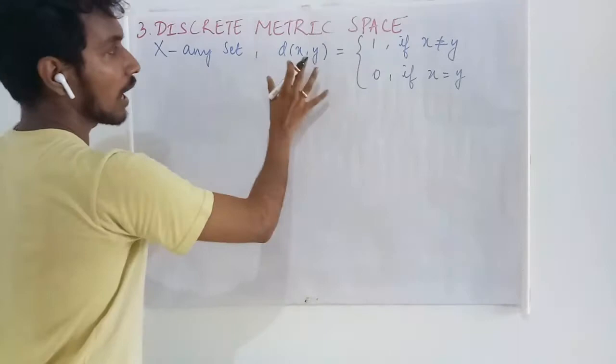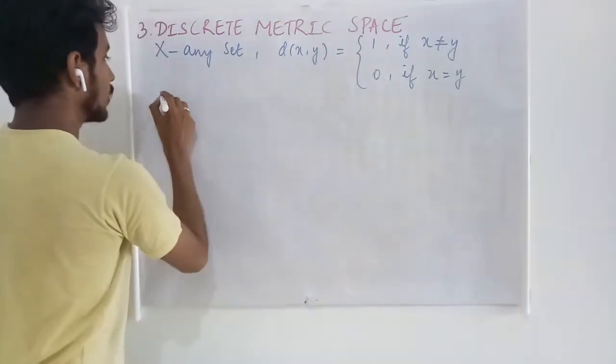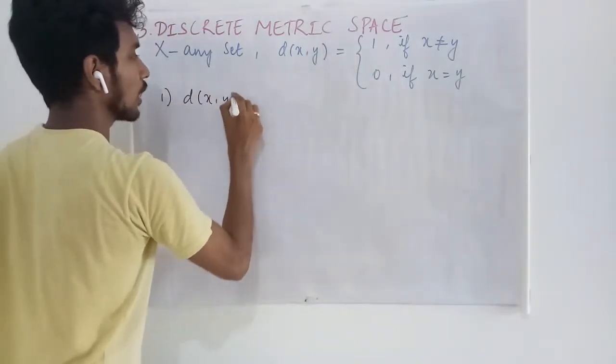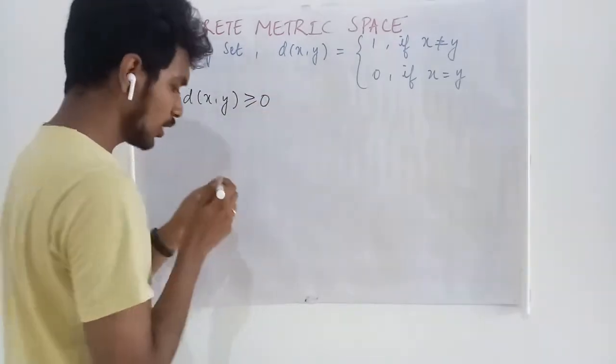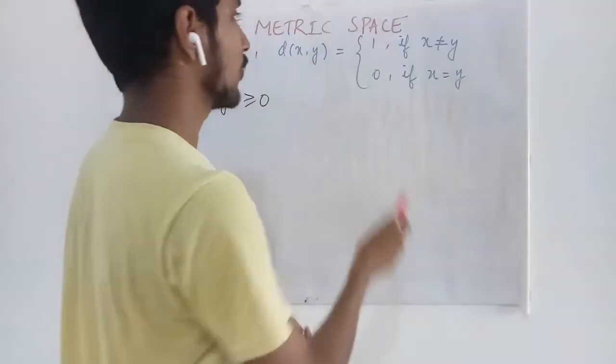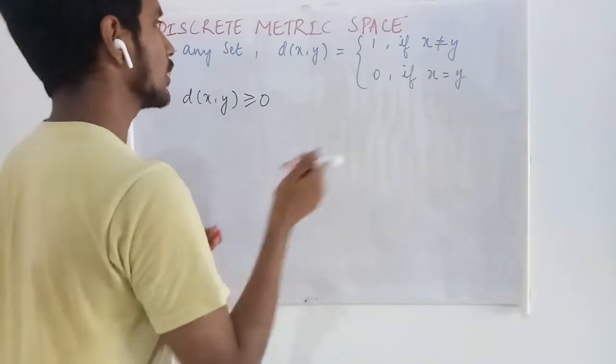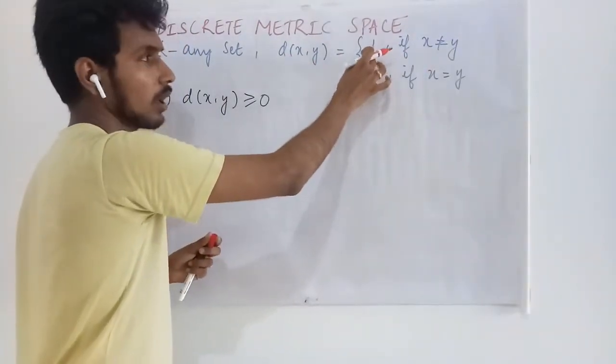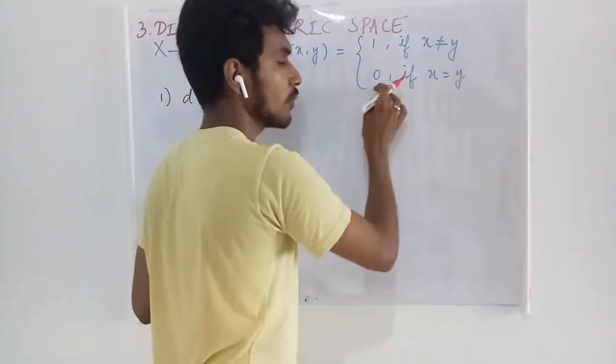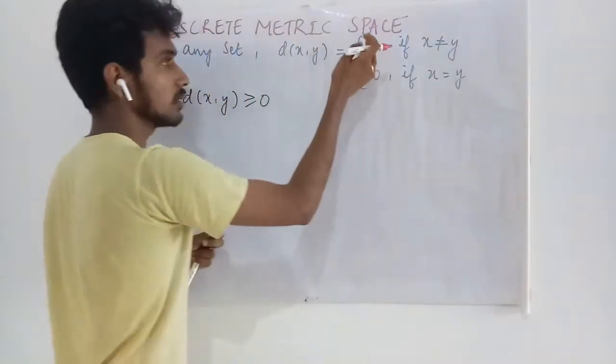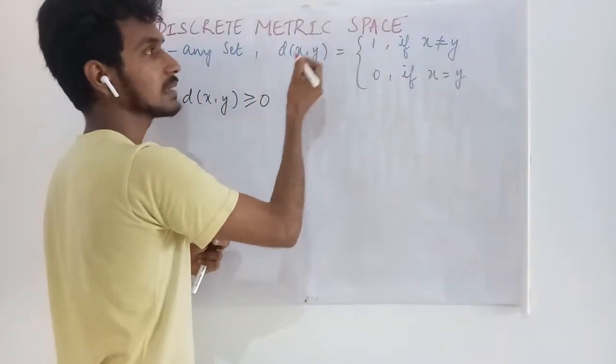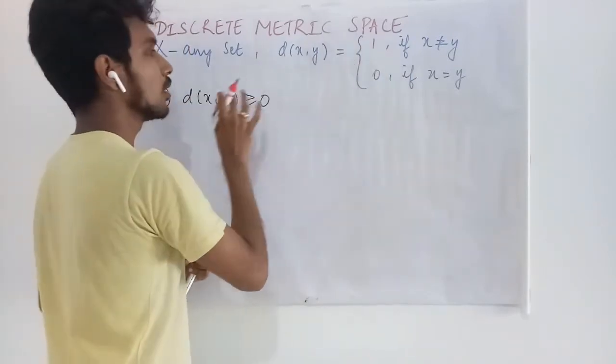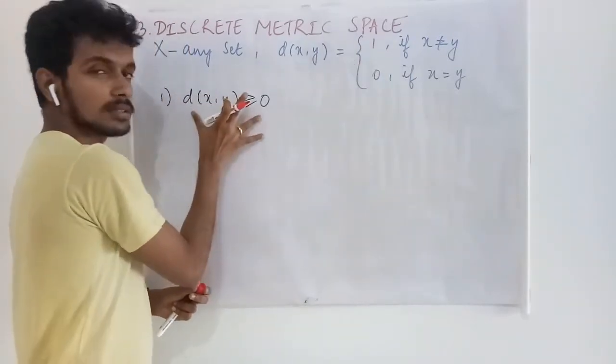Now we have to prove this is a metric. We have to prove the non-negativity. In order to prove non-negativity, you just look at the definition. What is given? If two entries are different, we get 1. If the two entries are same, we get 0. In that case, the value of this d is either 1 or 0, so it is true.